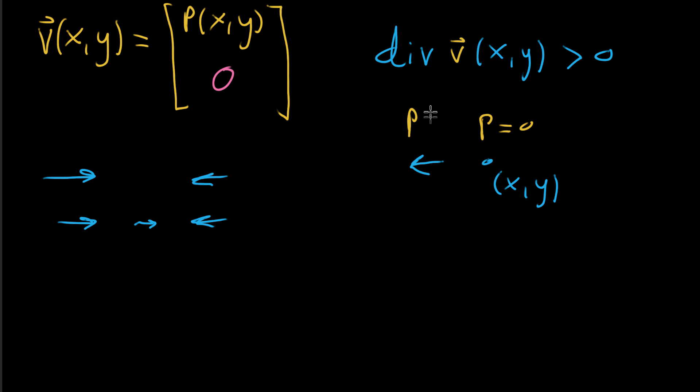That's why the x component of this vector is negative. But then to the right, vectors would be moving off to the right. So over here, p would be positive.